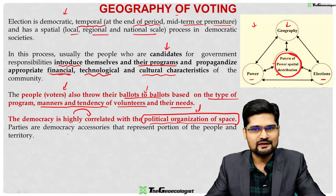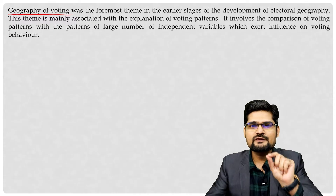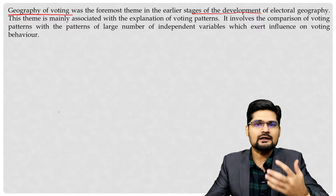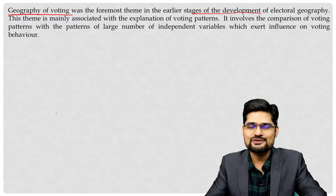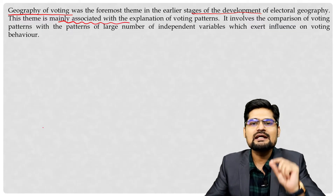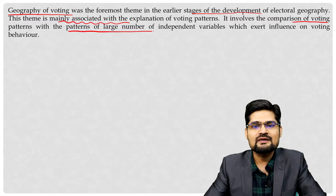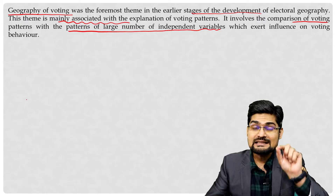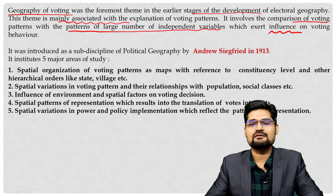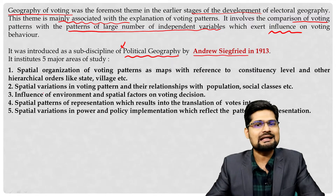That's why we have something called electoral geography. The geography of voting, which is spatially part of electoral geography, was the first and foremost theme in earlier stages of development. These studies picked up largely in the 1970s with the development of human geography, political geography, and geography in the modern state. This theme is mainly associated with the explanation of voting patterns and its attributes — what are the geographic influences. It involves the comparison of voting patterns with the patterns of a large number of independent variables, introduced as a sub-discipline by Andrew Siegfried in 1913.